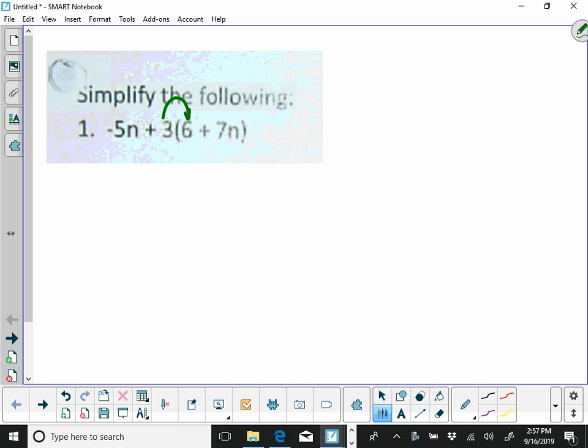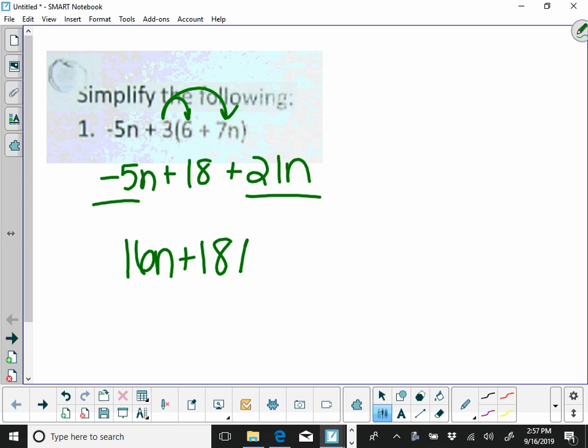So I'm going to start here by distributing my 3, and then I'm going to combine like terms. So negative 5n plus 21n is going to give me 16n plus 18.